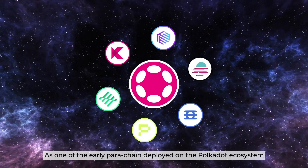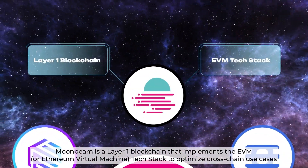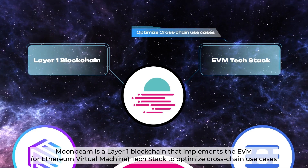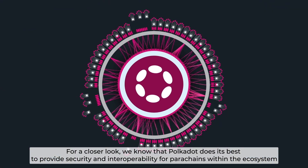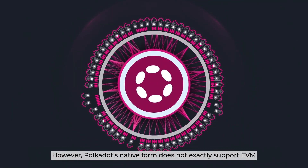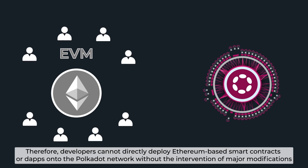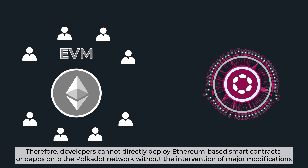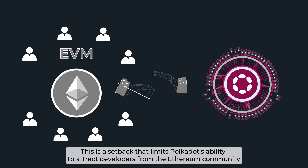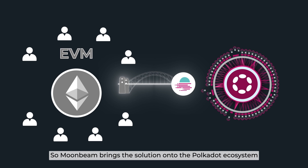As one of the early parachains deployed on the Polkadot ecosystem, Moonbeam is a layer-one blockchain that implements the EVM tech stack to optimize cross-chain use cases. Polkadot does its best to provide security and interoperability for parachains, however Polkadot's native format does not exactly support EVM. Therefore, developers cannot directly deploy Ethereum-based smart contracts or DApps onto the Polkadot network without major modifications — a setback that limits Polkadot's ability to attract developers from the Ethereum community. So Moonbeam brings the solution onto the Polkadot ecosystem.